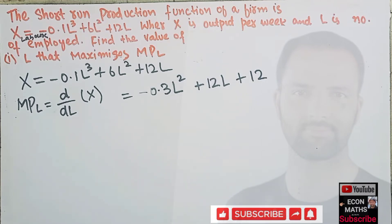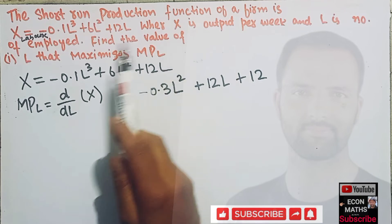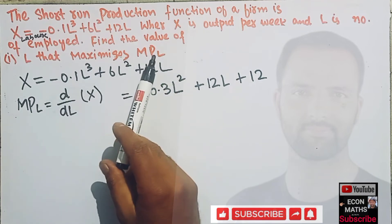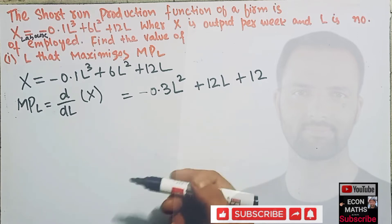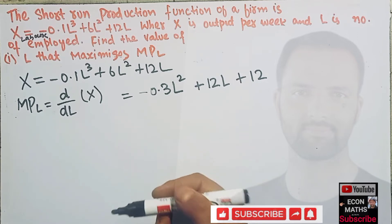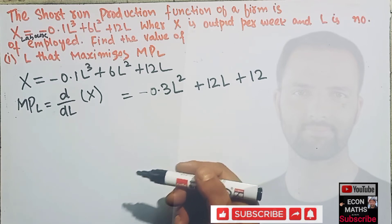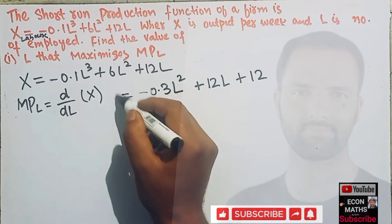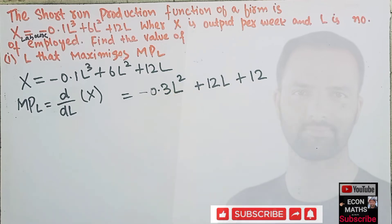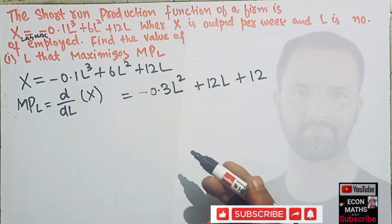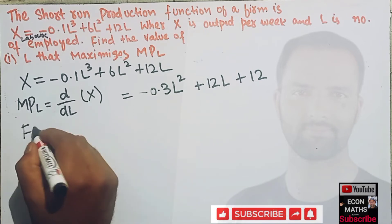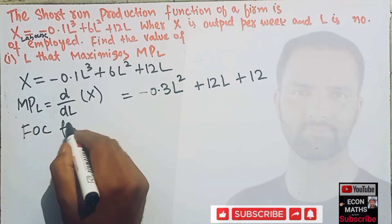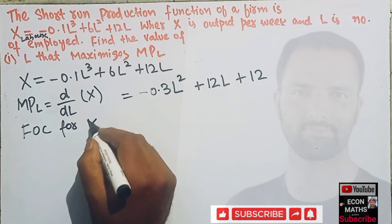Now we have to find the value of L that maximizes the marginal product of labor. For that, the first order condition for maximization of MPL requires that the derivative of MPL with respect to labor should be equal to zero.